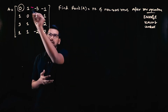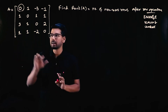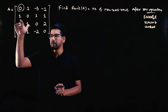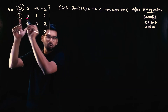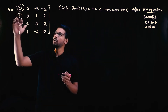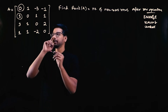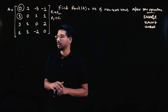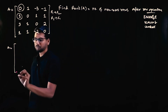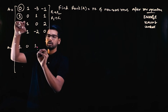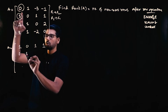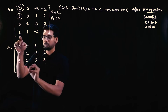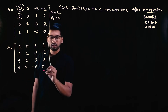We start by using the first element of the first row as a pivot to make all elements below it zero. Since the first element at position (1,1) is zero, we need to exchange rows to bring a non-zero element there. So we swap row one and row two. After the exchange, the new first row is [1, 1, 0, 0] and the rest of the matrix is updated accordingly.